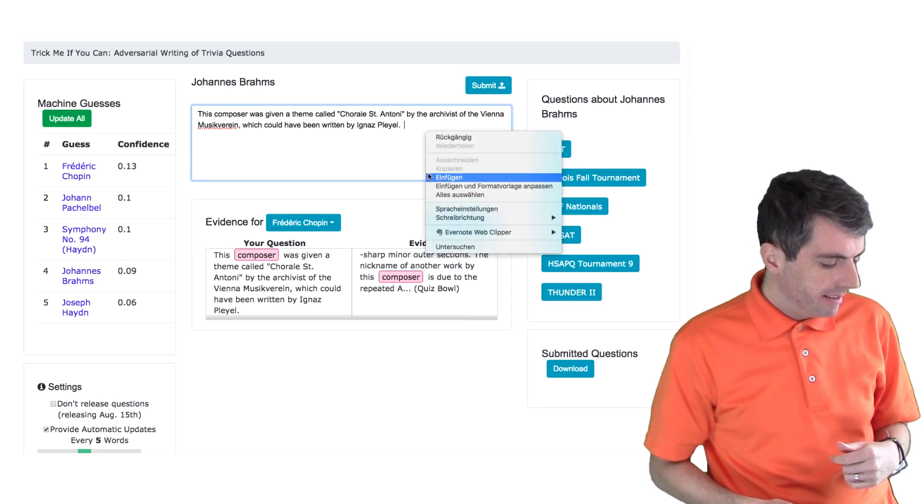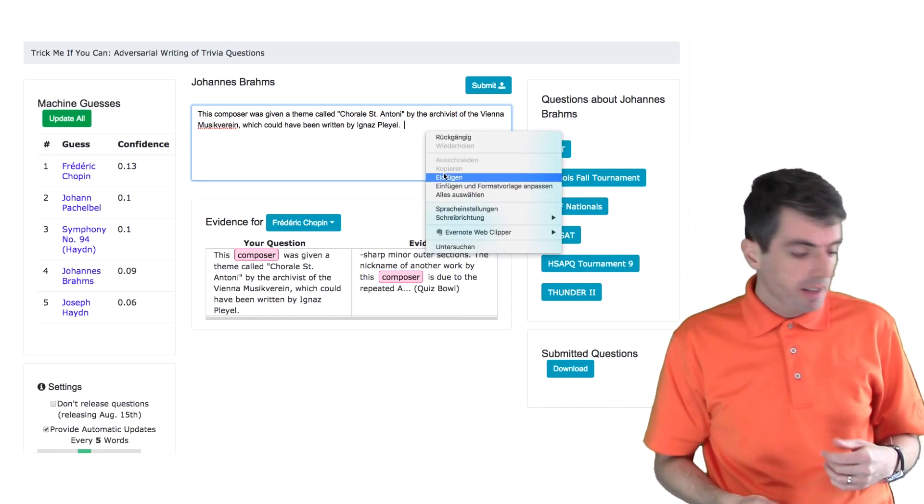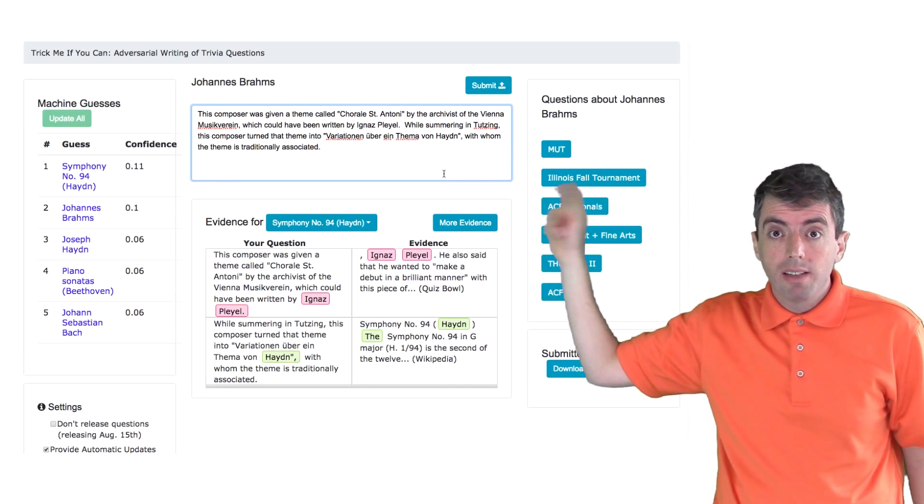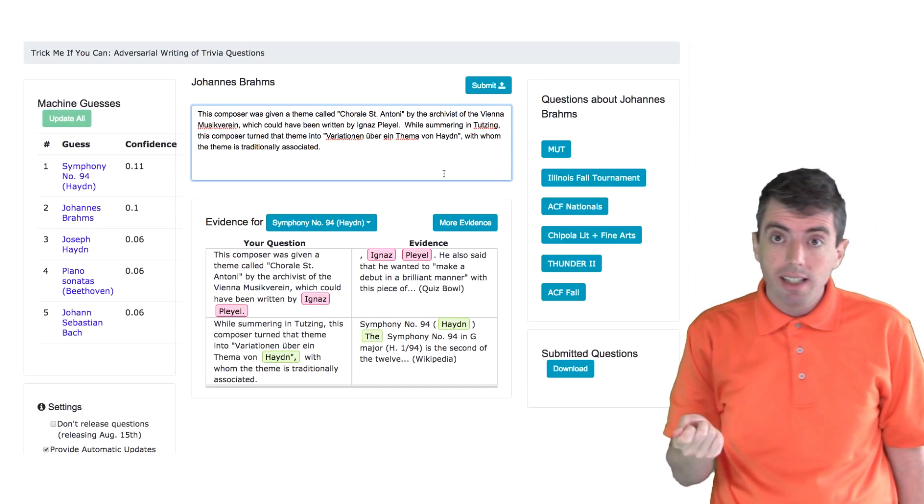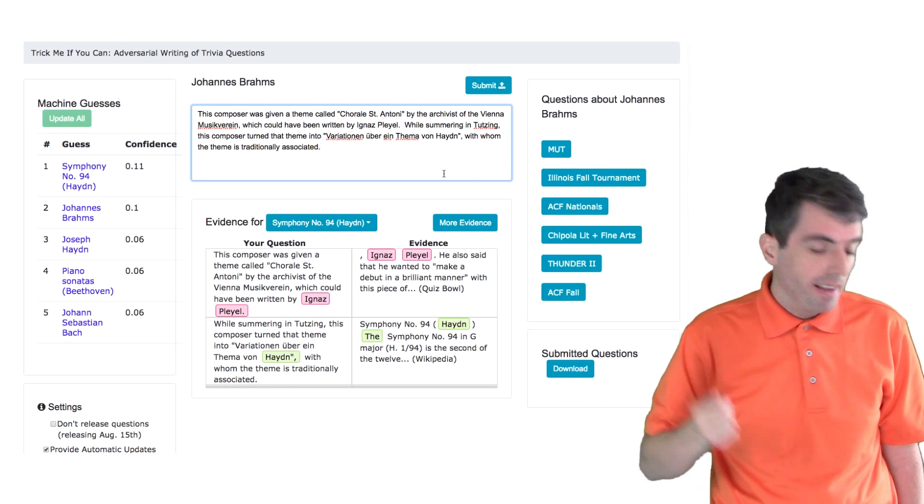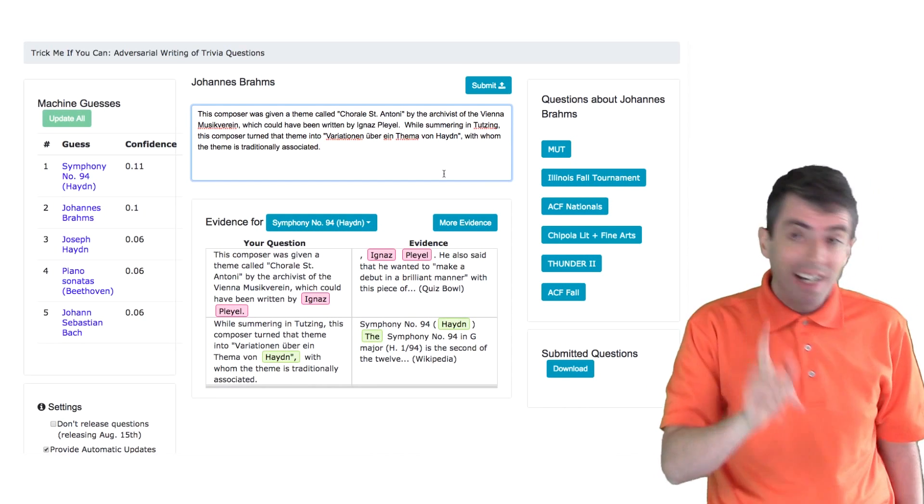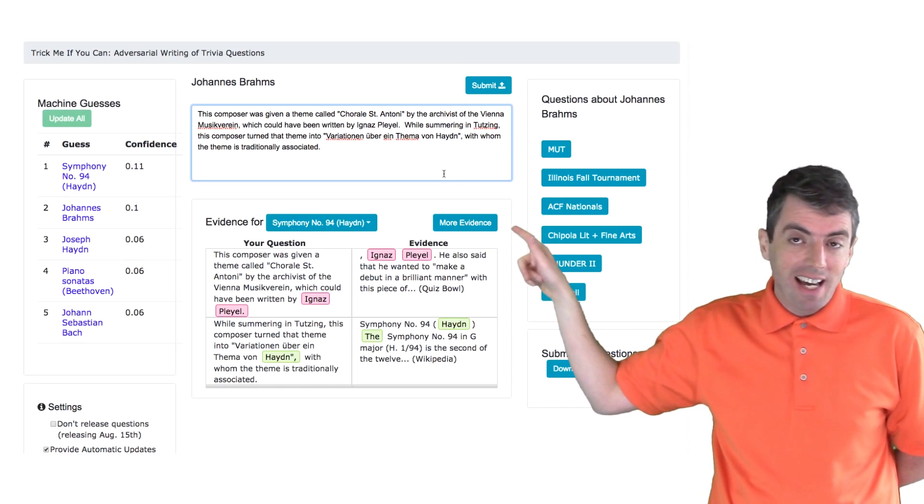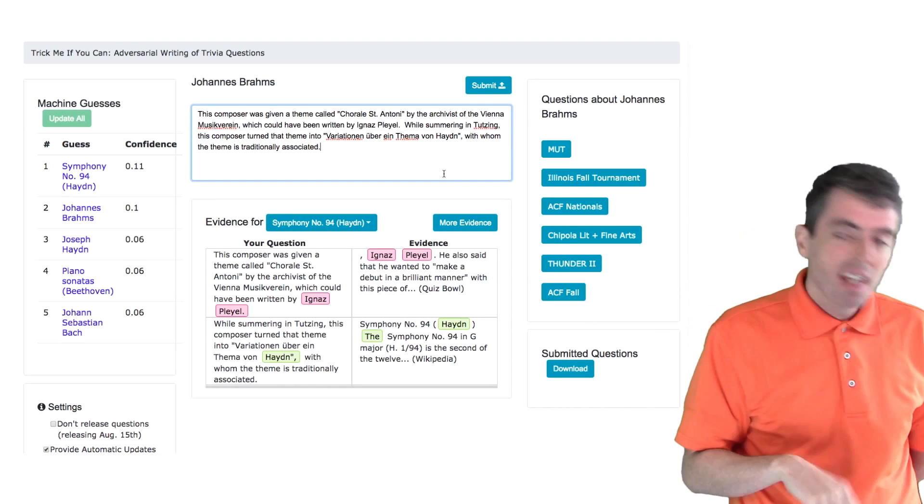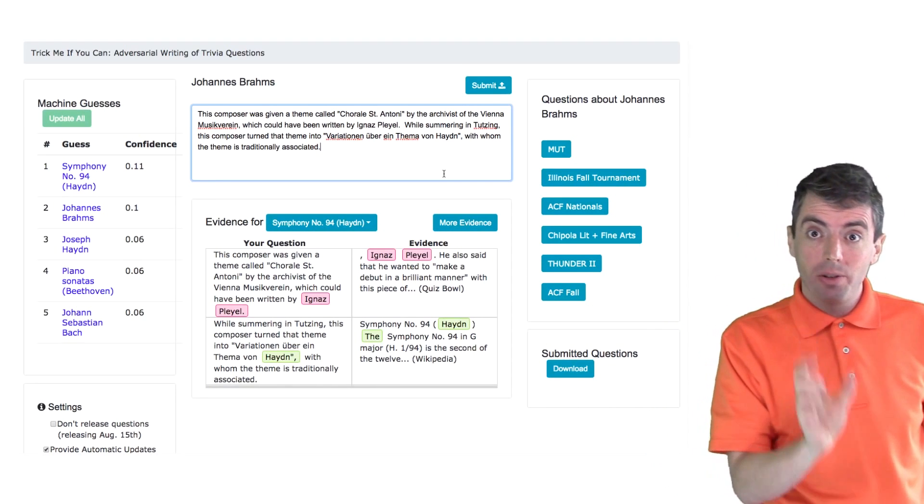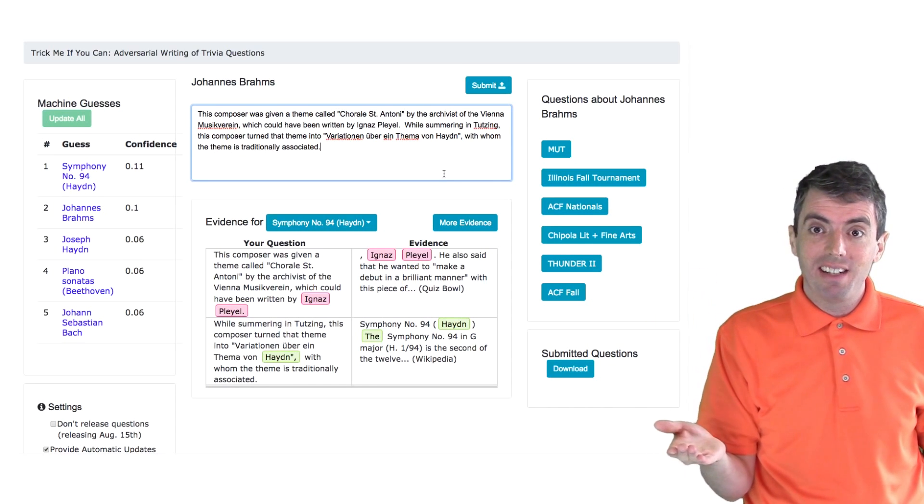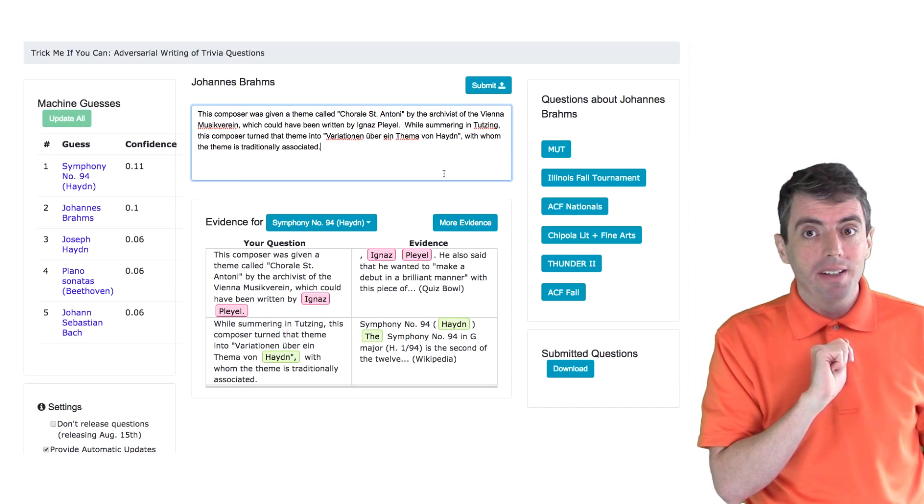And so in the next sentence, what I'll do is I will continue talking about this piece. And I'll specifically mention that Brahms was summering in Tötzing, which is a suburb of Munich. And then I'll actually give the name of the piece, but I'll give the name of the piece in German. If I had written that as variations on a theme by Haydn in English, the system would get it right. A reasonable human could very easily figure out that Variationen über ein Thema von Haydn means the same thing as variations on a theme by Haydn, but the computer is not smart enough to figure that out.